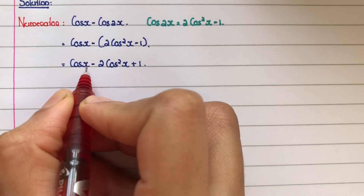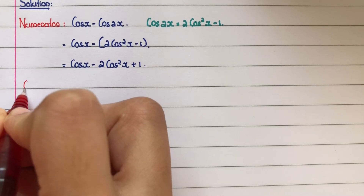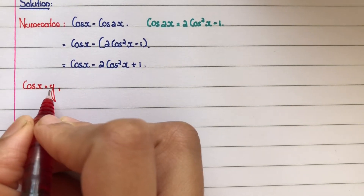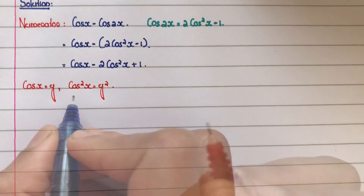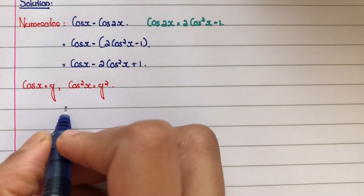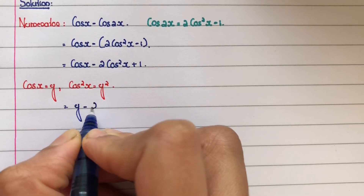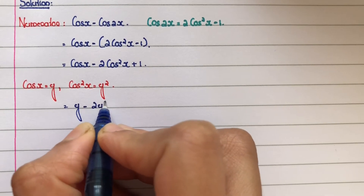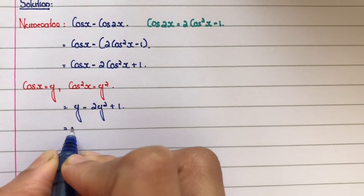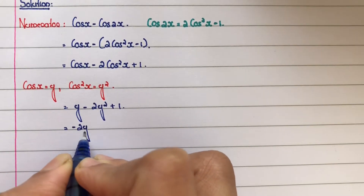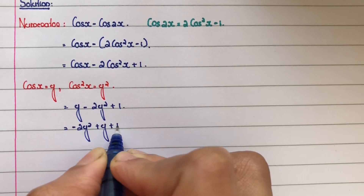Next, let cos x equal to y, so cos squared x equals y squared. The numerator expression becomes y minus 2y squared plus 1. Rearranging, this is minus 2y squared plus y plus 1.